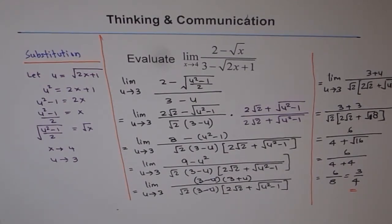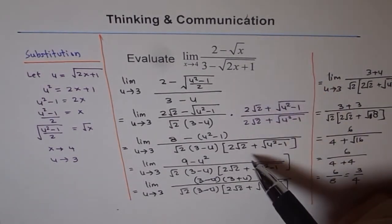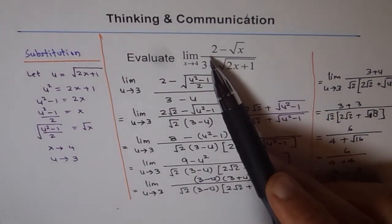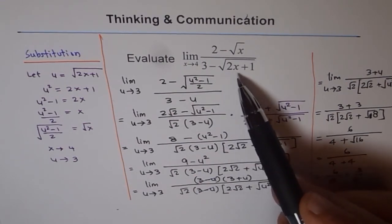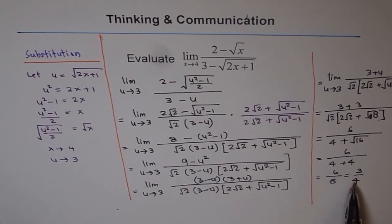We struggled a bit to get this solution. A better approach might have been to rationalize twice — rationalizing with (2 plus square root x) and also with (3 plus square root of 2x plus 1) — which would probably be a faster way to reach the answer. Try that method on your own. This is the limit of this function. Thank you.